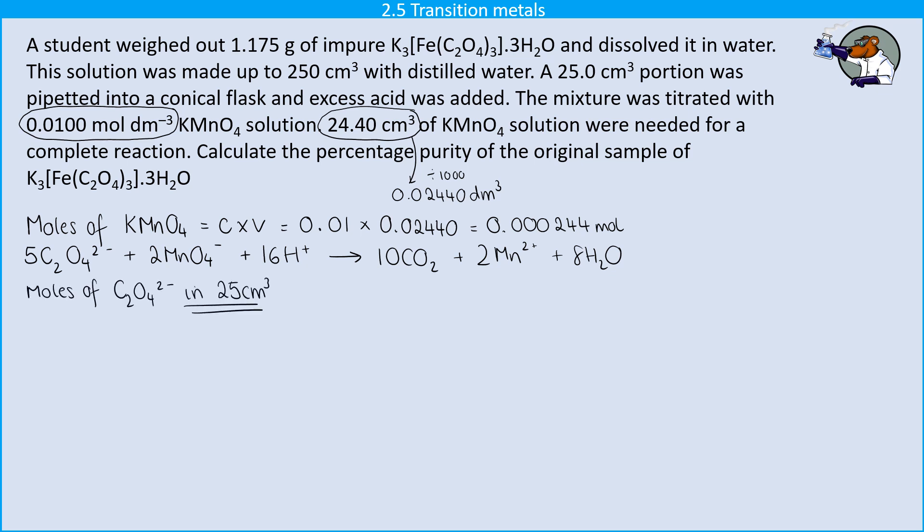So now I can use the coefficients that are in this question to help me to work out how many moles of ethane dioate ions I have. And you'll see I've put here in 25 centimetres cubed. So we're thinking about the moles that are reacting with the potassium permanganate. And it's important that that's what we're working out because there's a next step that lots of people are going to miss out.